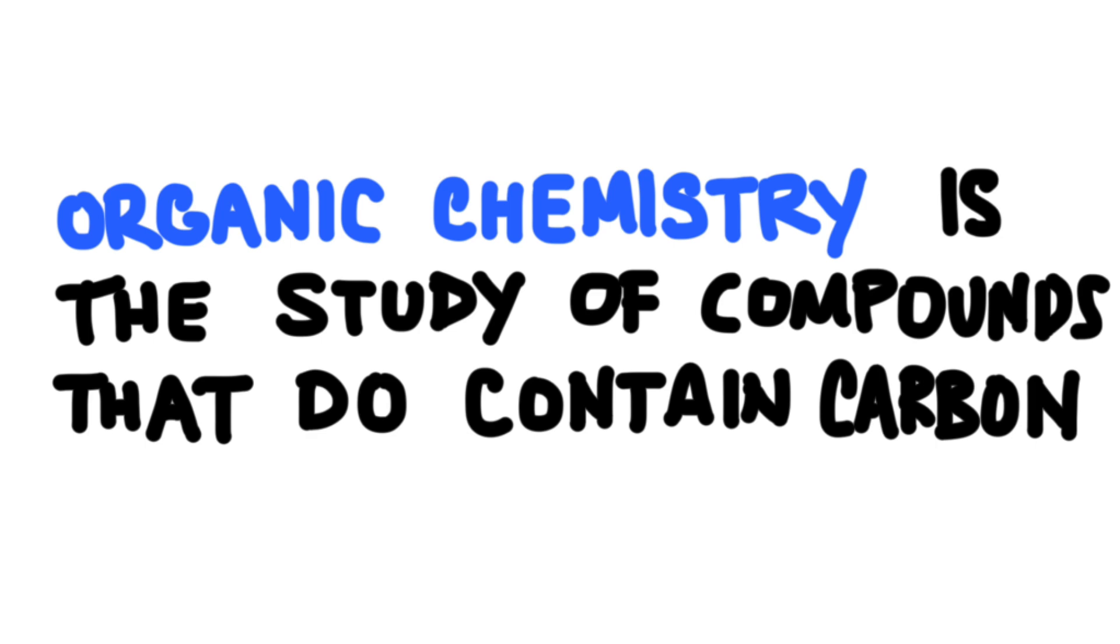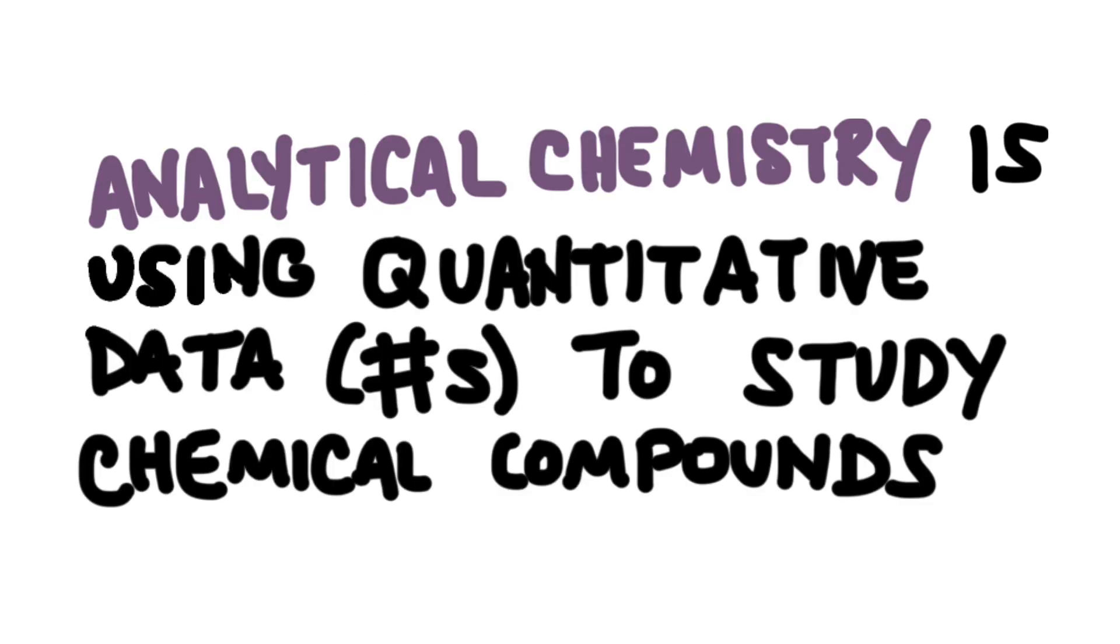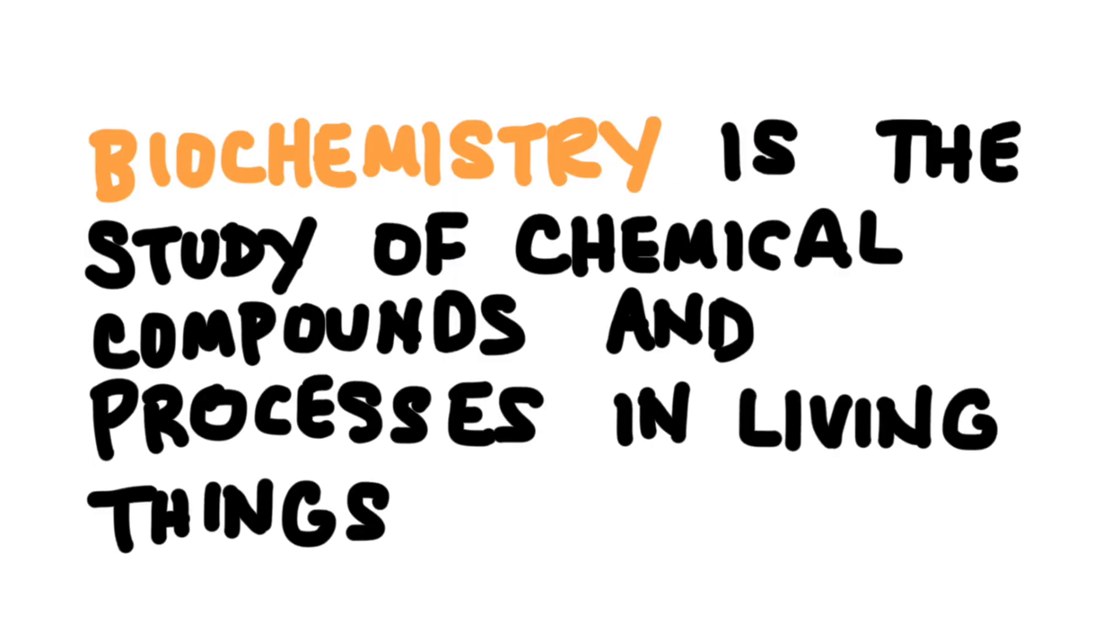And then there's organic chemistry, the study of compounds that do contain carbon. And physical chemistry, the study of chemical phenomena that can be explained with physics. Analytical chemistry uses quantitative data, that is data involving numbers, to study chemical compounds. And finally biochemistry, the study of chemical compounds and processes in living things.